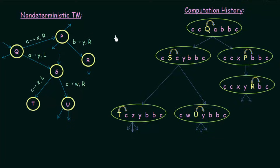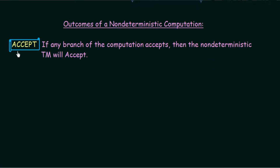The next thing to know is: what are the outcomes of a non-deterministic Turing Machine's computation? Turing Machines generally have three outcomes: accept, reject, and loop. In a complete Turing Machine there is an accept state. If any branch of the computation leads to the accept state, then the non-deterministic Turing Machine accepts the particular input that was fed into it.